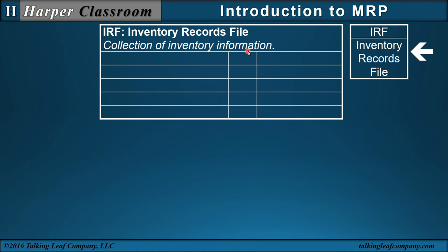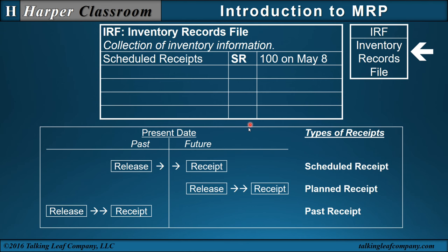Next is the inventory records file, which is a collection of inventory information — all information you need other than the bill of materials and master production schedule. For this video, we will look at five items. The first is scheduled receipts, defined as a future receipt of a past order release. The future and past are dependent on a present date, which is extremely important in MRP. There are three types of receipts: a scheduled receipt, a planned receipt (a future receipt of a future planned order release), and a past receipt. MRP only looks at the future, so it only considers scheduled receipts and planned receipts — not past receipts.